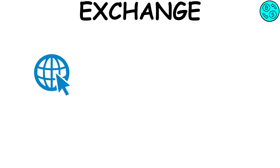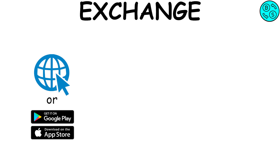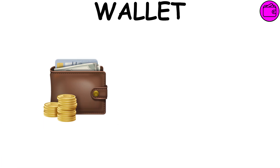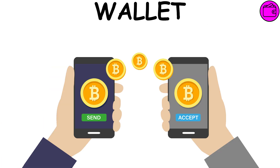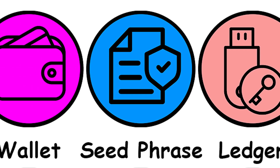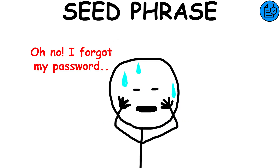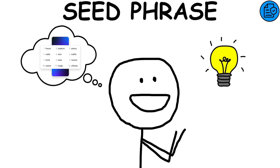Exchange: a website or application that allows users to buy and sell cryptocurrencies. Wallet: like a physical wallet, but digitally. Directly on your smartphone, it allows you to carry out transactions and keep track of payments. Seed phrase: it is a sequence of words randomly generated by an algorithm that allows you to access a crypto wallet and recover information if you forget your password.